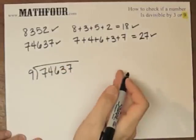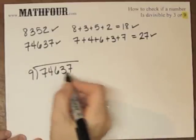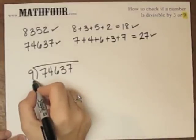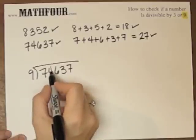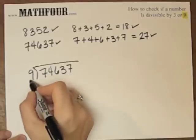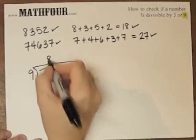So 9 doesn't go into 7. And you know, I really hate multiplying by 9, so this was probably a bad example for me. It sends me into a little bit of math anxiety myself. So 9 can go into, this is probably 8. 8 times 9 is 72. So let's use that.